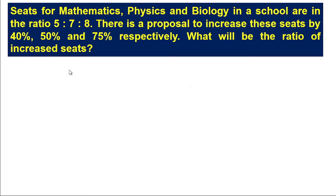Hello fans and welcome back to the Warrior Classes. Today in this video we will solve a problem related to Ratio and Proportion. The given question is: Seeds for Mathematics, Physics and Biology in a school are in ratio 5:7:8. There is a proposal to increase these seeds by 40%, 50% and 75% respectively. What will be the ratio of increased seeds?